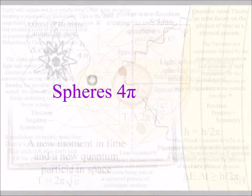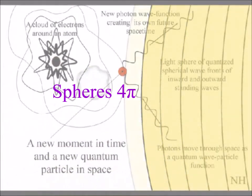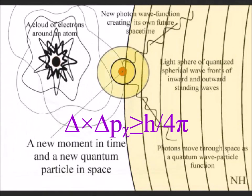Light radiates out in all directions forming spherical geometry that naturally forms three-dimensional space.